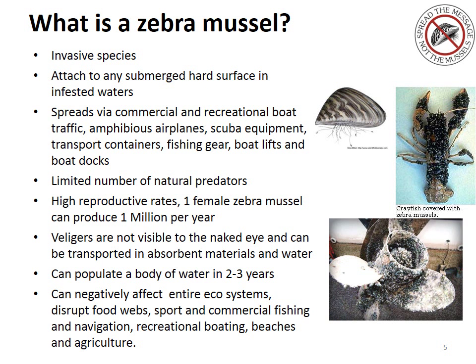A zebra mussel is a freshwater mussel also considered an invasive species. They attach themselves to anything submerged on a hard surface in infested waters using byssal hairs. They spread very easily, and the number one way they spread is via commercial and recreational boats that have been in infested waters. But they also spread on amphibious airplanes, scuba equipment, transport containers, fishing gear, boat lifts, and boat docks.